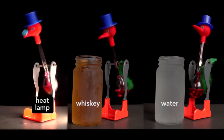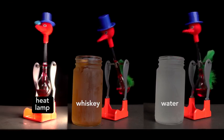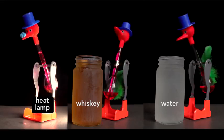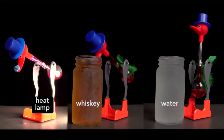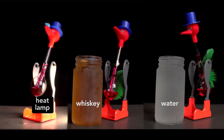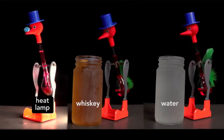Roughly, the heat bird takes three drinks for every one of the water bird. The whiskey bird takes two for every drink of the water bird. The reason the bird drinks whiskey faster than water is because the rate of evaporation of the alcohol is greater than that of water.